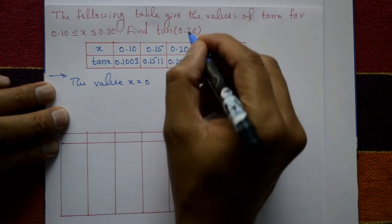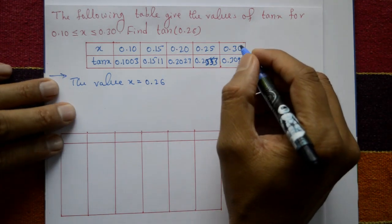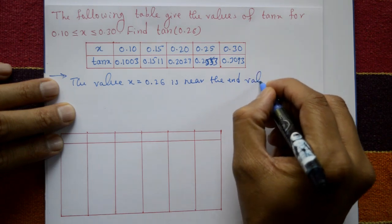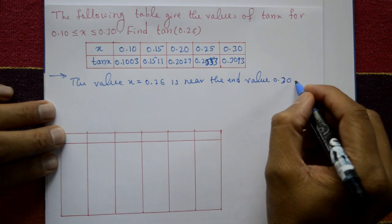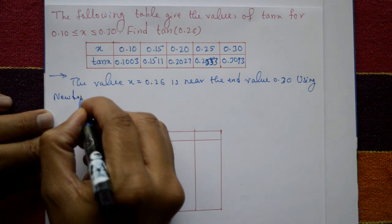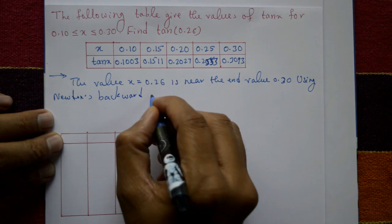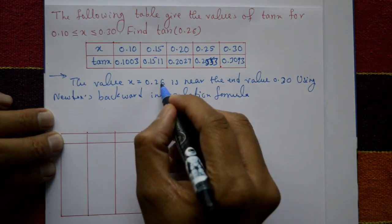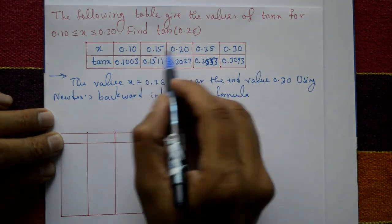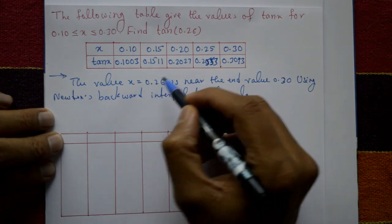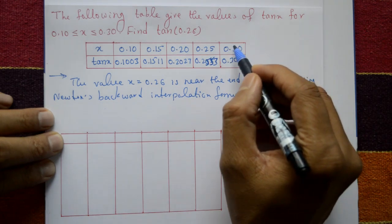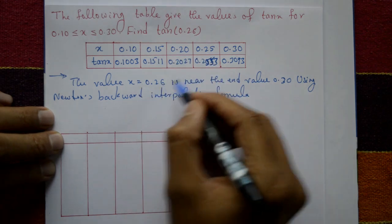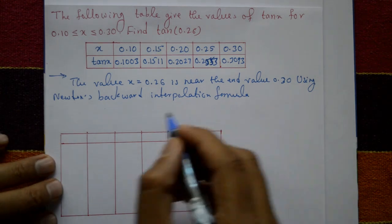The value x = 0.26 is close to the end value 0.30, which is near the end of the second half of the data. Since 0.26 is close to the last value 0.30, we use Newton's backward interpolation formula. If it were close to the first value, we would use the forward formula.